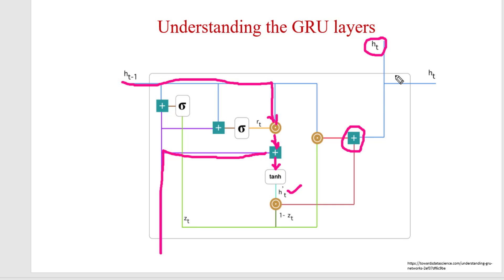So GRU includes two gates. First is update gate and second is reset gate. Update gate decides which information need to be passed and reset gate will decide which information should be forgotten.